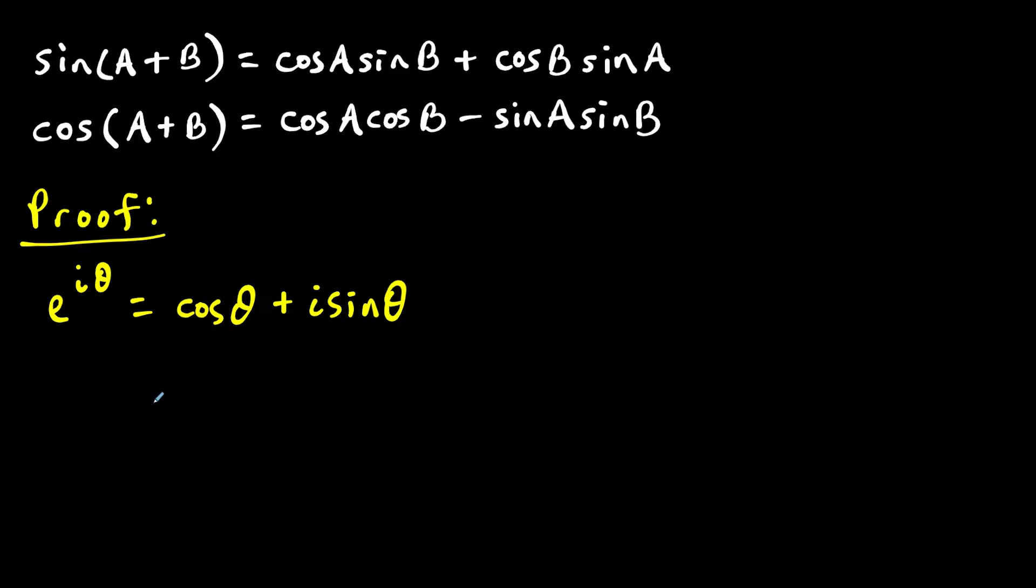And the way we're going to go forward with this is I want to look at if I were to write out these two equations here. If I have e to the i, a plus b in parentheses, I could express this using the formula as cosine of a plus b plus i times sine of a plus b.